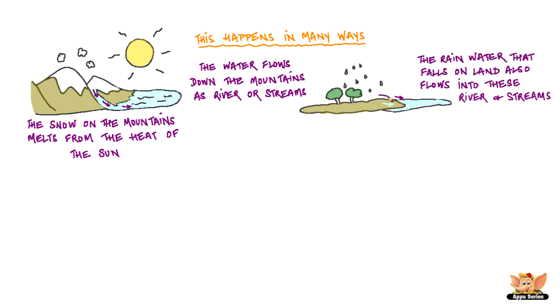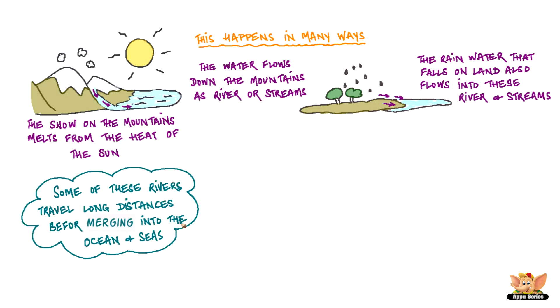The rain water that falls on land also flows into these rivers and streams. Some of these rivers travel long distances before falling into the ocean and seas. Lakes and ponds also get filled by some of the rain water.